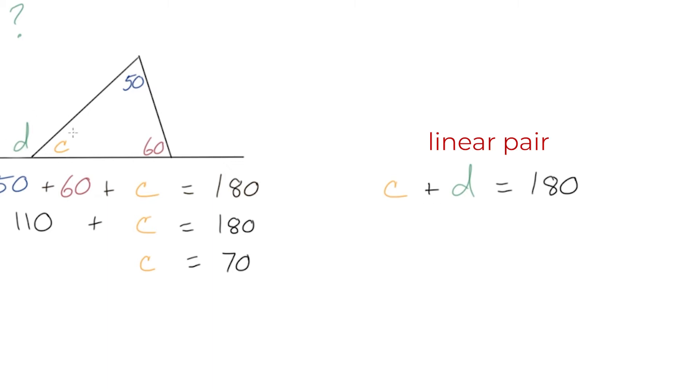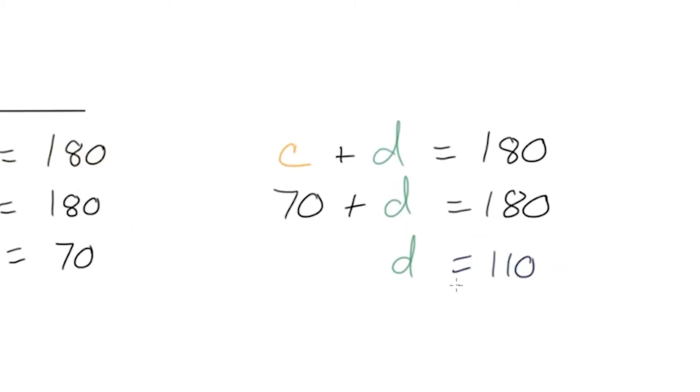So when angles are adjacent and supplementary like this, you'll hear them referred to as a linear pair. So now because we already figured out that C is 70, that means we can plug that in for C, and then when we subtract 70 from both sides, we get D is equal to 110. So we found our answer, D is 110 degrees.